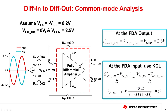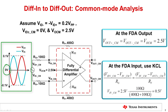First, let's analyze the input common mode and output swing of an FDA configured as a differential input to differential output amplifier. I will use a numerical example to simplify the analysis. Assume that each differential input swings 200 millivolts peak to peak on a 0-volt DC common mode, and that the two inputs are, as expected, 180 degrees out of phase.